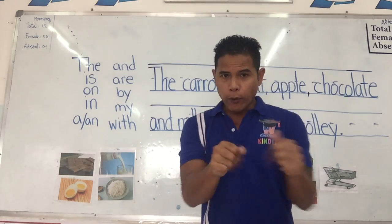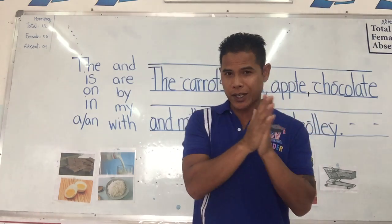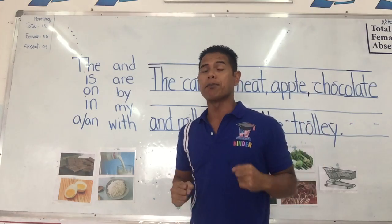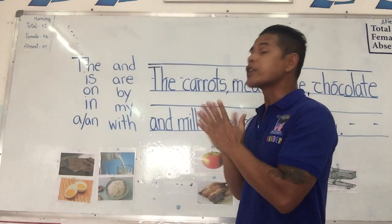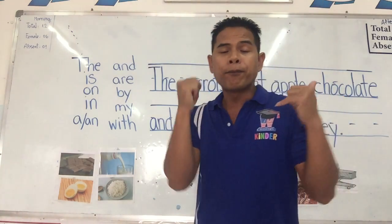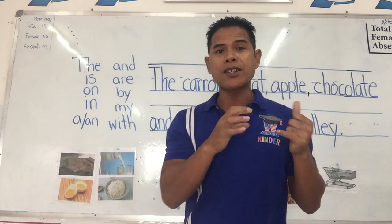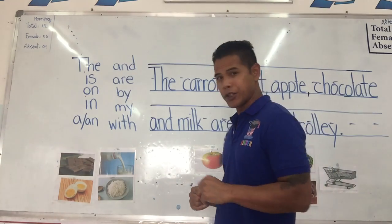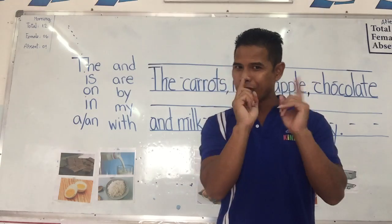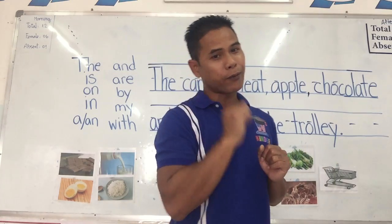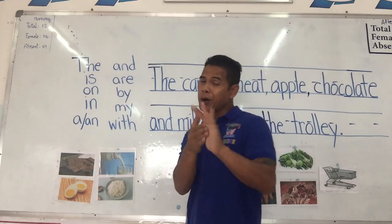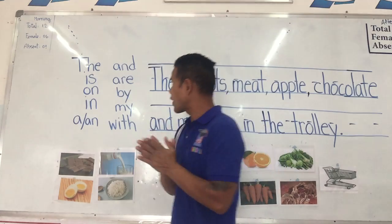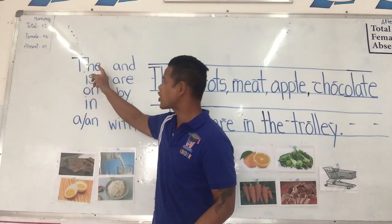Before we get to reading the sentence and finding out what the sentence is about, let's go over some of the words that we find in a sentence a lot. We see them a lot in a sentence. I think you guys remember. You guys are very smart, so let's go — let's try to find out what they are. First one: T-H-E.